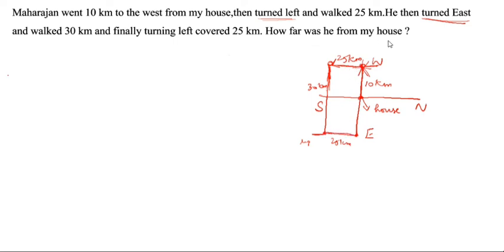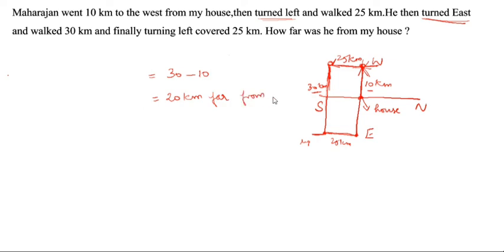How far was he from my house? This full distance is 30 km, and this part is 10 km, so 30 minus 10 equals 20 kilometers. He was 20 kilometers away from my house.